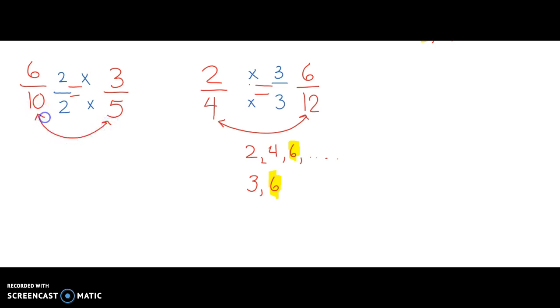And now, because I have the same numerator here, 6 and 6, I can now think about my denominators. I have 10 pieces out of the whole, and that would be larger than 12 pieces out of the whole, so 6/10 is larger than 6/12, and that means that 3/5 is larger than 2/4. I hope this has helped you understand how to compare fractions using common numerators.